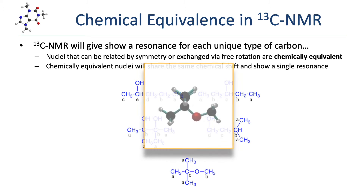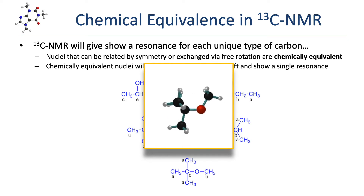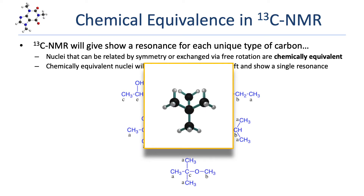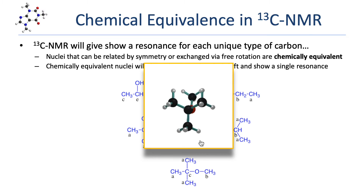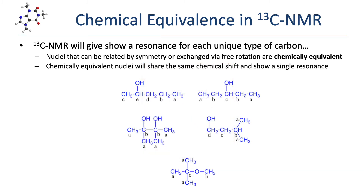The last molecule demonstrates chemical equivalence via free rotation. The carbon labeled C has three identical methyl groups attached to it, and those three methyl groups are interchangeable by free rotation along the carbon-oxygen bond. The other methyl group, labeled B, is unique — there is no mirror plane reflecting carbon B to carbon A, and carbon B can't be interchanged for any other carbons via free rotation. So this molecule has three unique types of carbon and would show three resonances in a C13 spectrum.